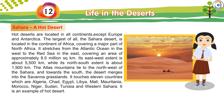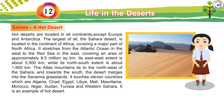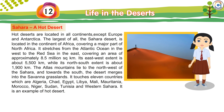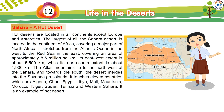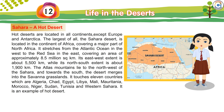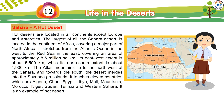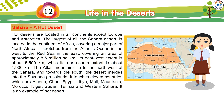Hot deserts are located in all continents except Europe and Antarctica. The largest of all, the Sahara Desert, is located in the continent of Africa, covering a major part of North Africa. It stretches from the Atlantic Ocean in the west to the Red Sea in the east, covering an area of approximately 8.5 million square kilometres.